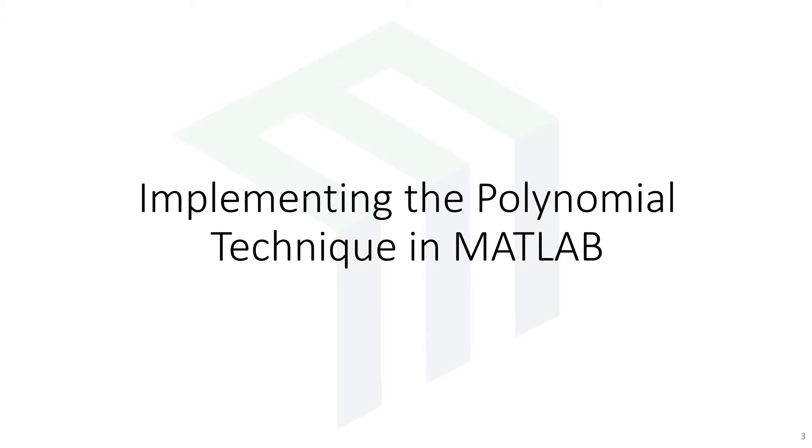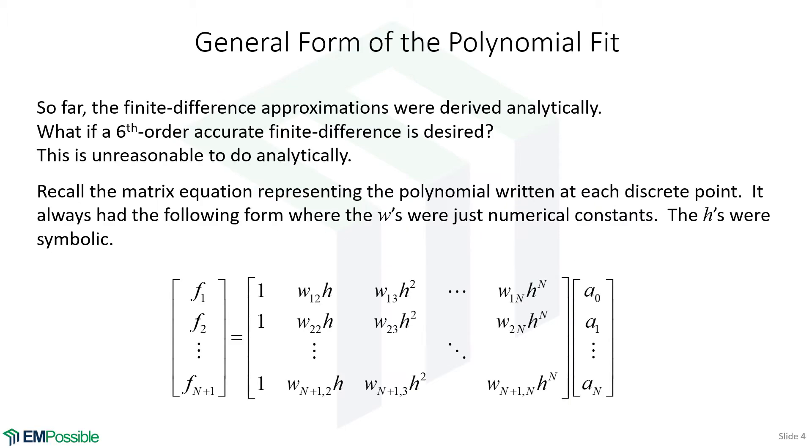Let's remember the general form of our polynomial fit, where we have symbolic function values, polynomial coefficients we're trying to find, and this huge X matrix. What is inside the X matrix? Some kind of constant times H, constant times H squared, constant times H all the way to the N value. That X matrix has this general form, and this is what makes it possible to do this in MATLAB fully numerically, even though we have these symbolic H terms there.